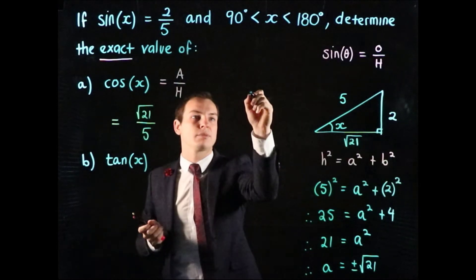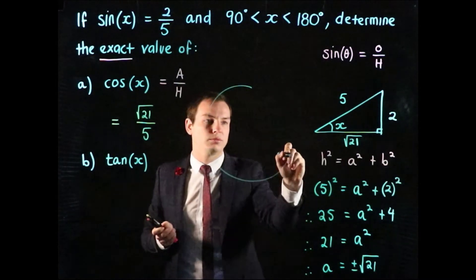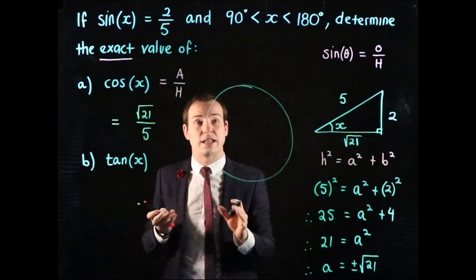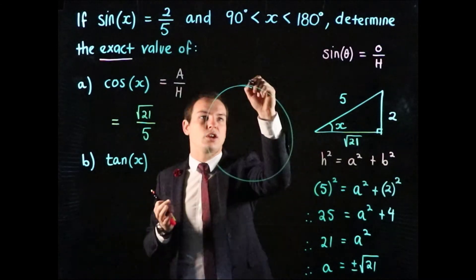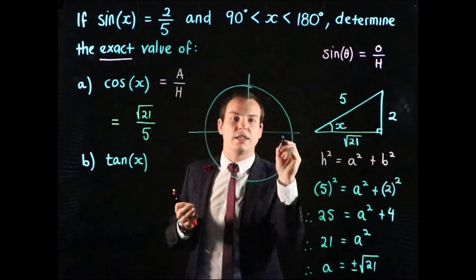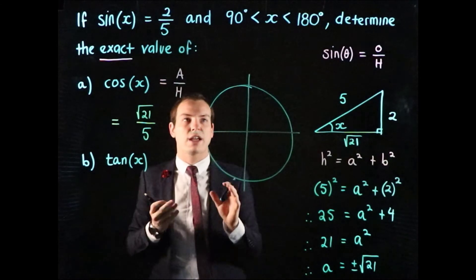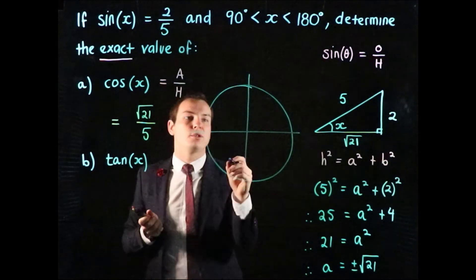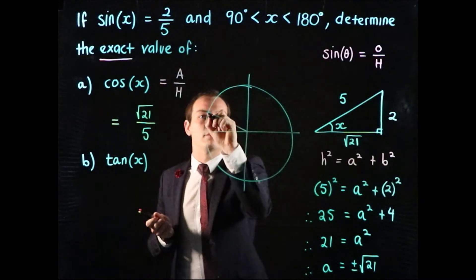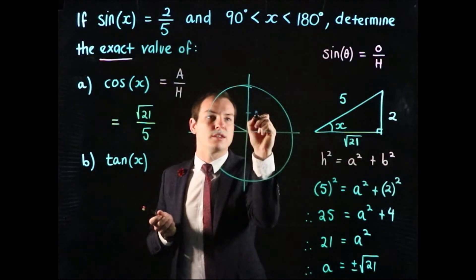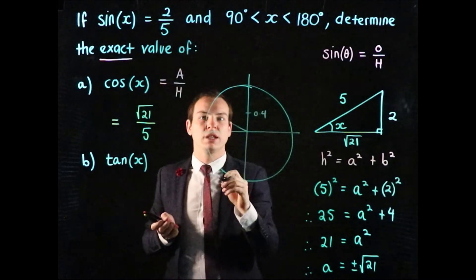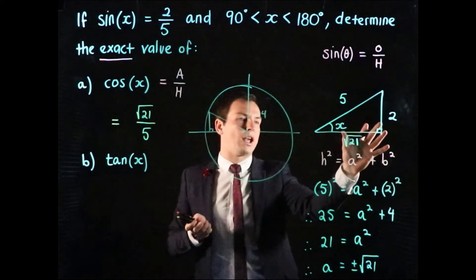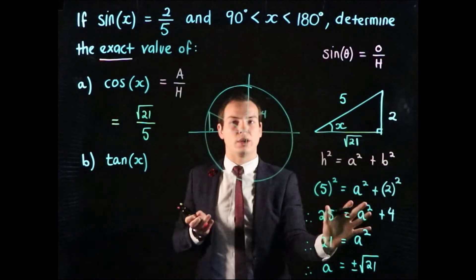Let's think about what that might mean for the value of cosine if x is between 90 and 180 degrees. Here's our unit circle. This is the second diagram we need to fully answer this question. It's centered at the origin on a set of axes. We know that the sine value is 2 on 5 or 0.4.